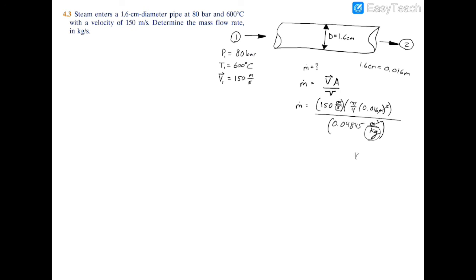If you plug all this into a calculator, you'll find that m dot equals 0.6225 kilograms per second.